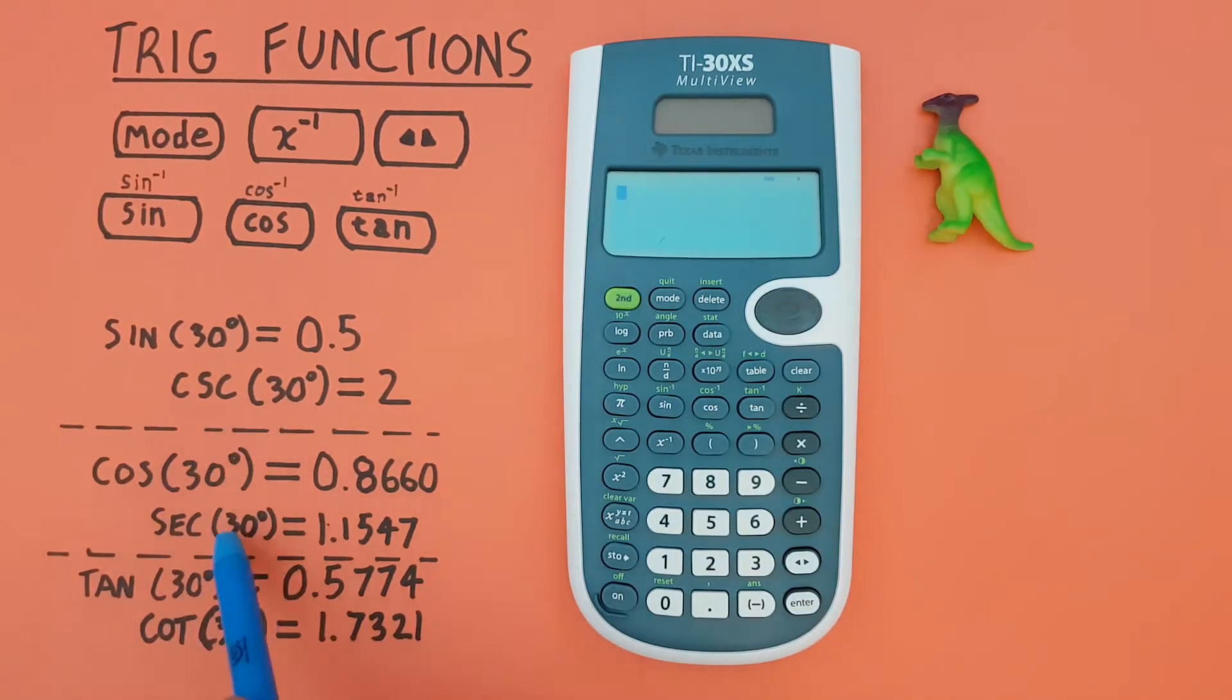What about cosecant, secant, and cotangent? Well, to do that, there's no actual button on the calculator. What we have to do is inverse the corresponding sine, cosine, or tan.